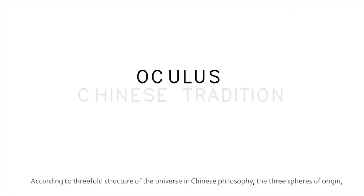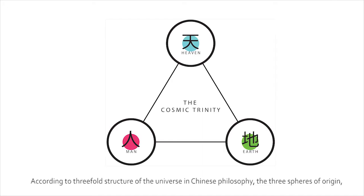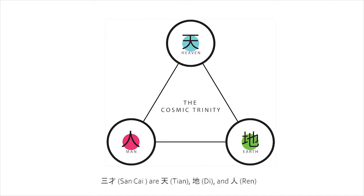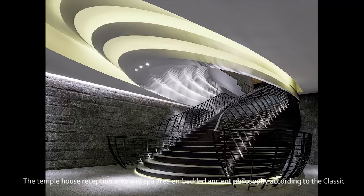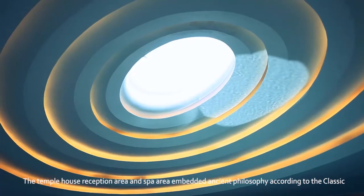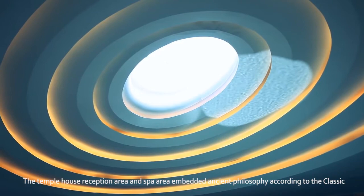According to the three-fold structure of the universe in Chinese philosophy, the three spheres of origin — san cai — are tian, di, and ren. The Temple House reception area and spa area embed Asian philosophy according to the Classic of Changes.